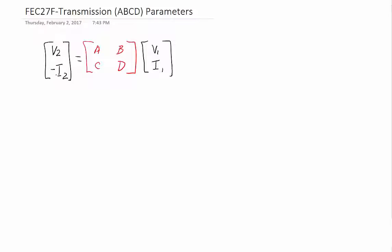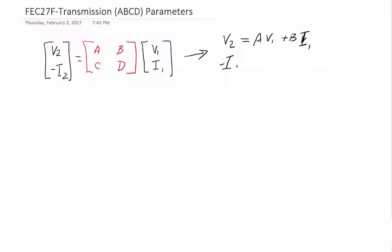This is the first of the five parameters — Z, Y, G, H, and ABCD — that we've talked about where one of the variables has a negative sign in front of it. So that's important to remember. Following the process we've had in the past, we can write this as: V2 equals A·V1 plus B·I1, and minus I2 equals C·V1 plus D·I1.